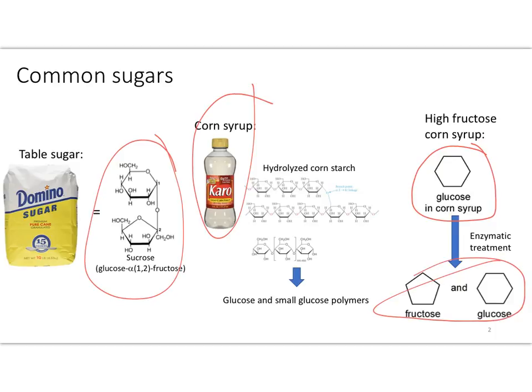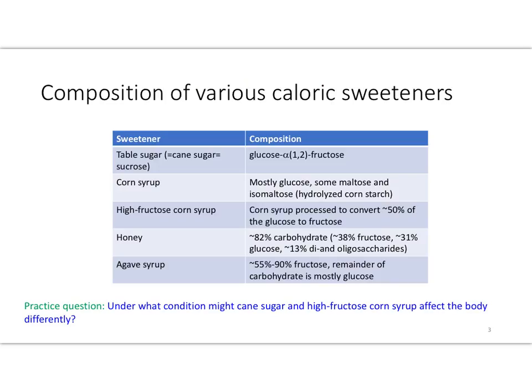High fructose corn syrup typically has close to a 50-50 ratio of fructose and glucose — sometimes a bit more fructose, sometimes a bit more glucose. This table summarizes those three sweeteners and compares them to honey, which is largely fructose with some glucose and other oligosaccharides, and agave syrup, which is mostly fructose with the remainder being glucose and some other carbohydrates.